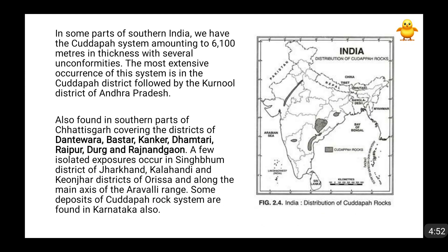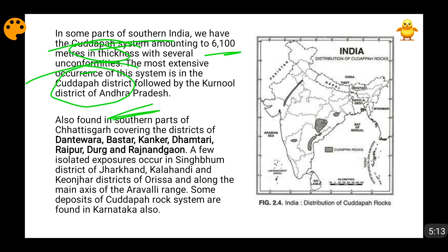Kudappa rocks are formed in some parts of Southern India. The Kudappa system sometimes becomes 6,100 meters thick. It has several unconformities, and the most extensive occurrence of this rock system is found in the Kudappa district of Andhra Pradesh. After that, it is found in the Kurnool district of Andhra Pradesh. Here on the map, you can see Kudappa and Kurnool districts of Andhra Pradesh.